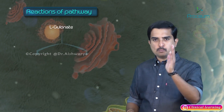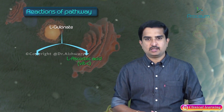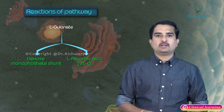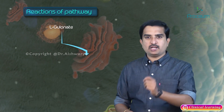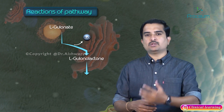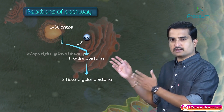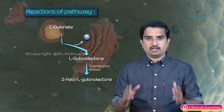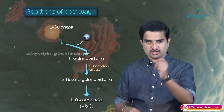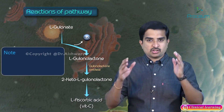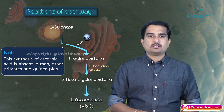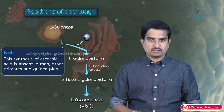L-glucuronate has two branches: one leads to the synthesis of ascorbic acid, and the other leads to the formation of pentoses, which ultimately enter the HMP cycle. In path 1, L-glucuronate undergoes dehydration to form L-glucuronolactone, which is converted into 2-keto-L-glucuronolactone by the enzyme glucuronolactone oxidase, and this is ultimately used for the synthesis of L-ascorbic acid (vitamin C). Importantly, this step is absent in humans, other primates, and pigs, making vitamin C an essential dietary requirement for humans.